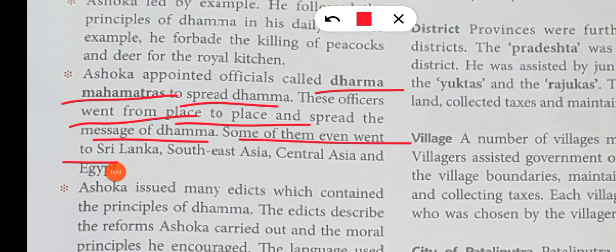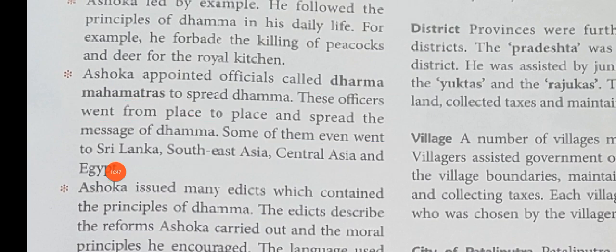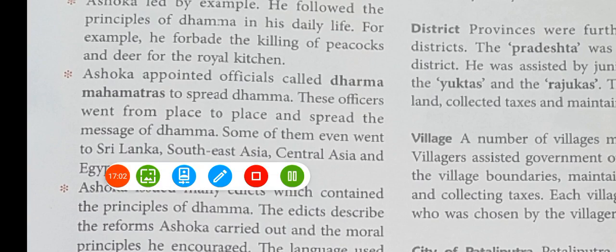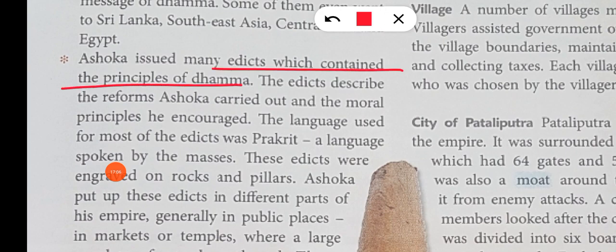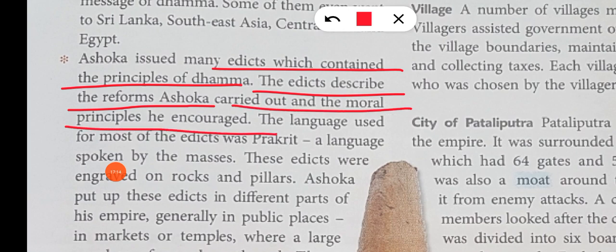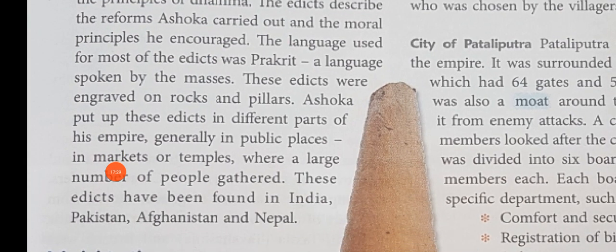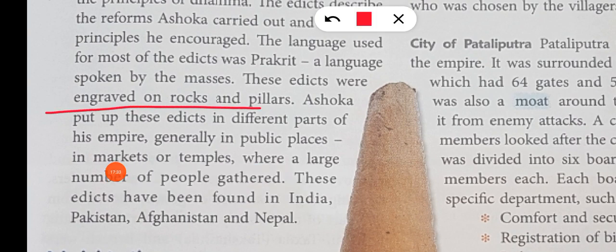Some of the Dhamma Mahatmas even went to Sri Lanka, Southeast Asia, Central Asia, and Egypt to spread the Dhamma on a major scale. Ashok issued many edicts which contained the principles of Dhamma. The edicts described the reforms Ashok carried out and the moral principles he encouraged. These edicts were engraved on rocks and pillars in Prakrit, a language easily understood by the common people, and placed in different parts of the empire.